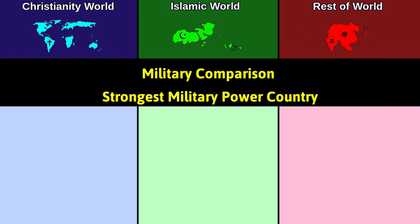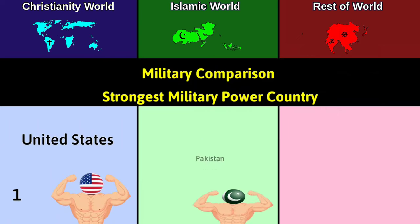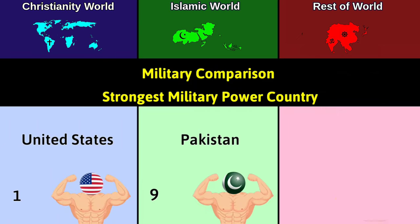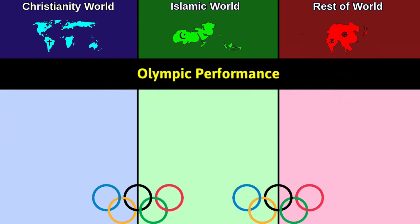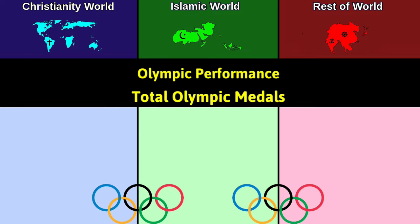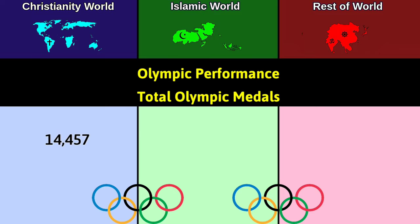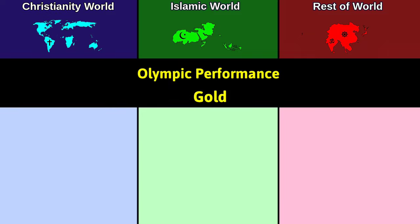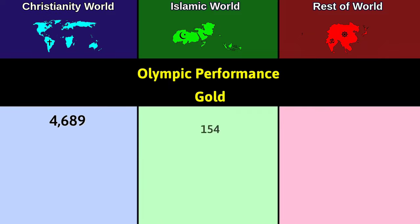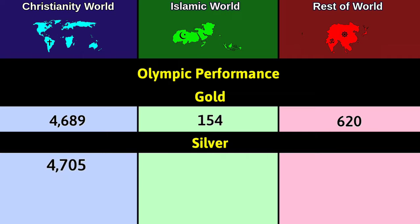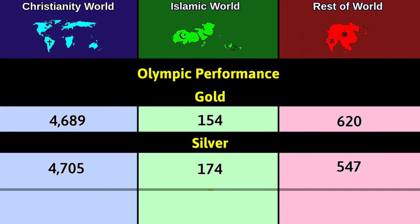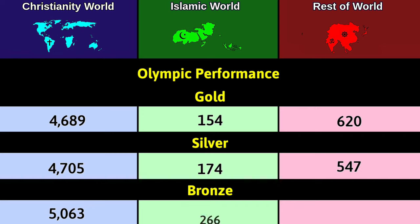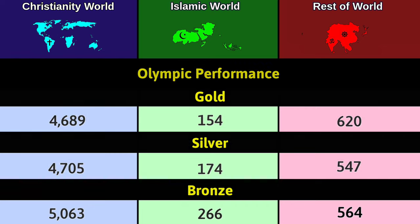Strongest military power country: Christianity — United States ranked 1st; Islam — Pakistan ranked 9th; Rest — China ranked 3rd. Olympic performance, total Olympic medals: Christianity 14,457; Islam 594; Rest 1,731. Gold medals: Christianity 4,689; Islam 154; Rest 620. Silver medals: Christianity 4,705; Islam 174; Rest 547. Bronze medals: Christianity 5,063; Islam 266; Rest 564.